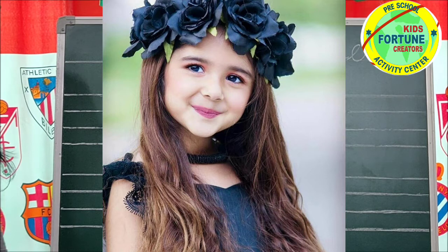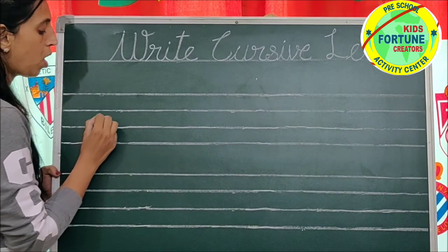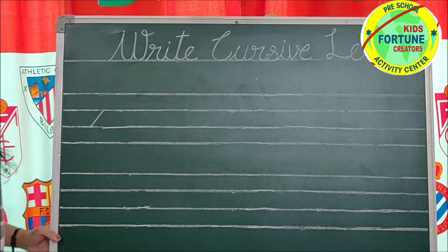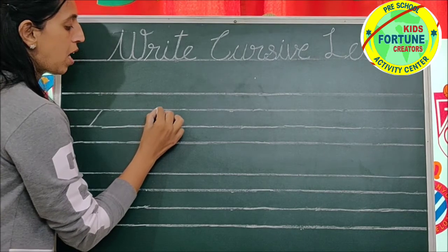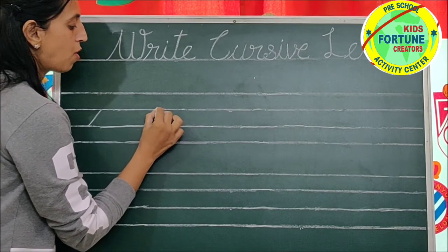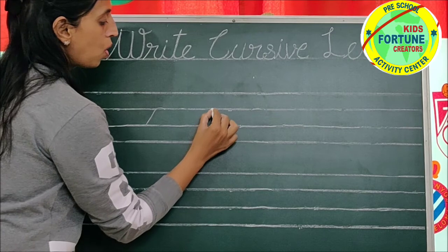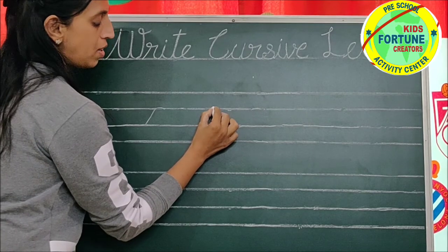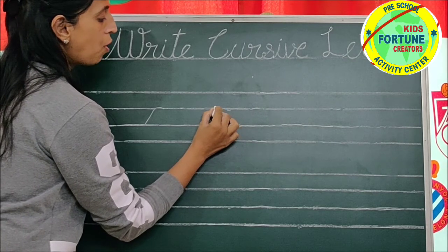Let's start. Look at the board. Go up with a slant line. Go up with a slant line. Move forward. Go up with a slant line. Move forward.